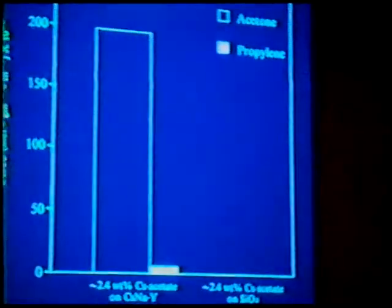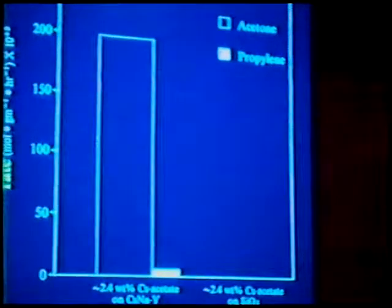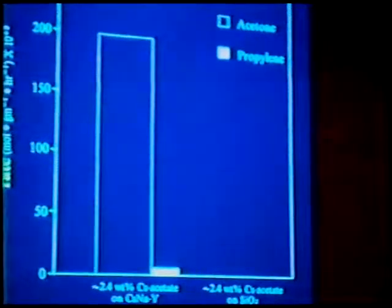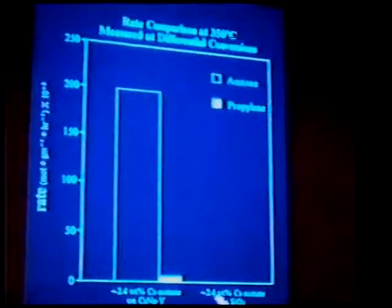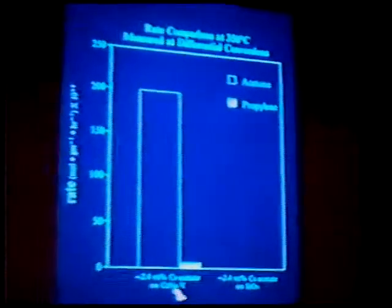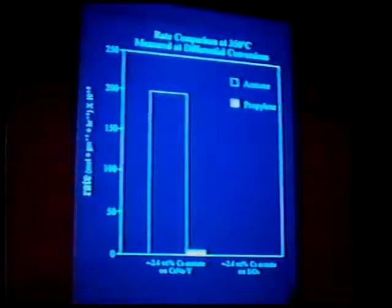We also took cesium acetate and put it on silica gel, just to see the influence of the support. Here we're looking at a comparable weight loading — 2.4 weight percent — on the cesium-Y and a silica gel. On a gram basis, you can see we have just trace acetone activity and propylene from the silica gel. Again, a nice influence of the zeolite working for us, because now we can do shape selectivity as well.